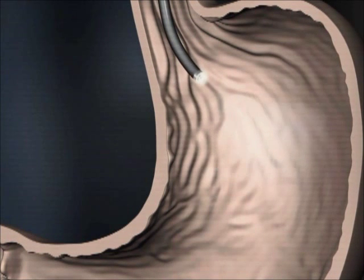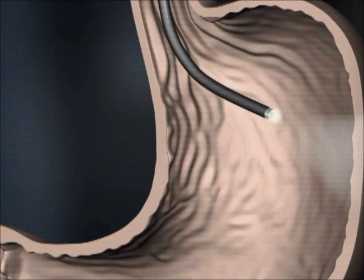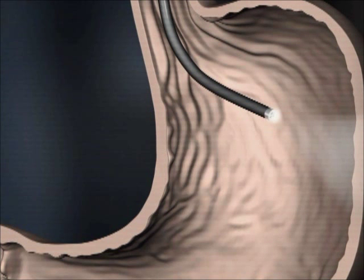Place the patient in the supine position and insufflate the stomach with air. Transilluminate through the anterior abdominal wall to select a gastrostomy site that is free of major vessels, viscera, and scar tissue.